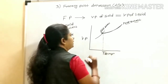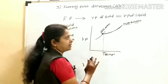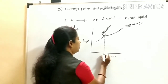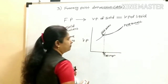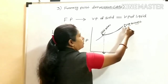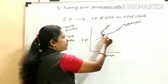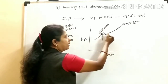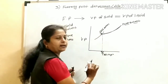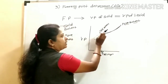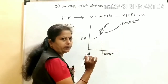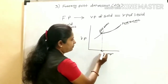At this equilibrium state, where the solid solvent and pure solvent curves intersect, this is the freezing point of the pure solvent, denoted as Tf naught. The temperature at the intersection point is the freezing point of the pure solvent.